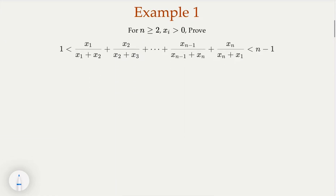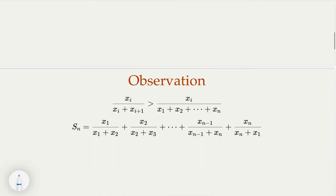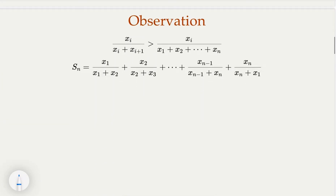In the first example, now that you know the technique, maybe you should pause the video and try it out. The observation here is that since everything is positive, if I change the denominator to include all the numbers, I am making the whole fraction smaller. In other words, I'm shrinking the original value. If I apply this technique for each term, I'm shrinking the whole thing.